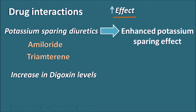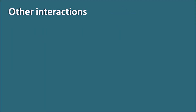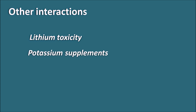Spironolactone can increase digoxin levels by inhibiting P-glycoprotein, an efflux pump. When this pump is inhibited, digoxin is not excreted, leading to increased digoxin levels and potential digoxin toxicity. Spironolactone can also increase lithium toxicity, as sodium is excreted more while lithium is retained. Additionally, it can worsen hyperkalemia when given with potassium supplements, and increase CNS sedative effects when given with alcohol.